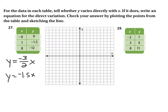It says to check your answer by plotting the points from the table and sketching the line. I'm going to mark the scale going by 2s so we can reach negative 12. I'll plot negative 6 comma 9 as a blue dot, then 1 comma negative 1.5 — about three quarters of the way down since each unit is two — and then 8 comma negative 12.